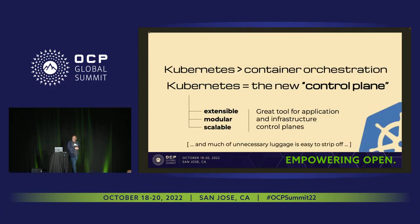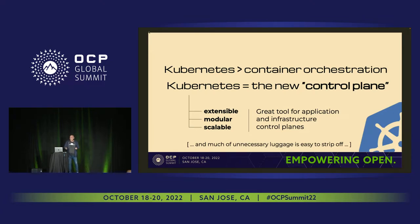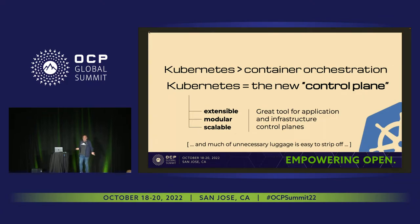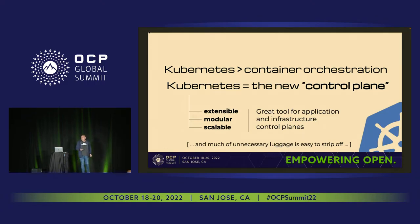Yes, sure. But Kubernetes is all over the place. It's a really powerful control plane. If you think about how Kubernetes is being used today, it's not just used for container orchestration — it's used for configuring applications, configuring infrastructure, and allocating resources. It's extensible, it's modular, it's scalable. There are control planes built around Kubernetes. If you look at things like Crossplane, those things are very, very useful. And much of its unnecessary luggage is actually not that difficult to strip off.